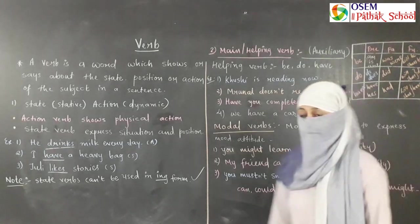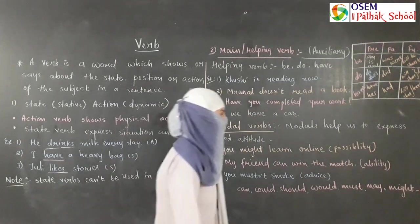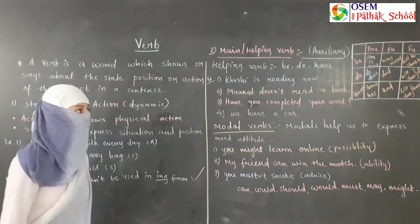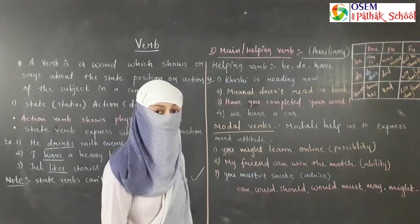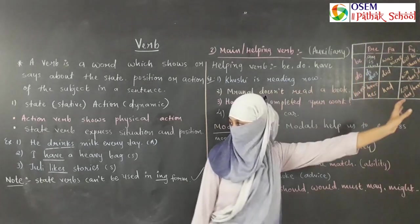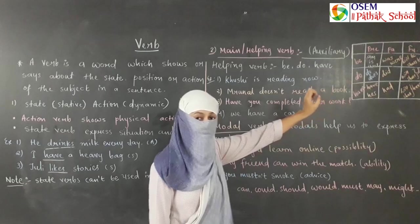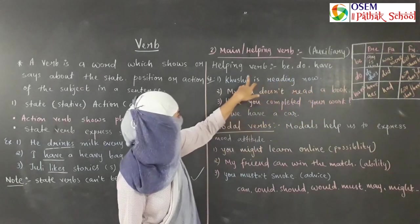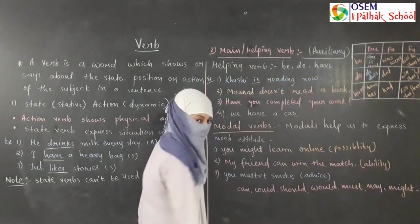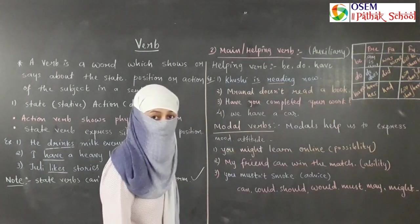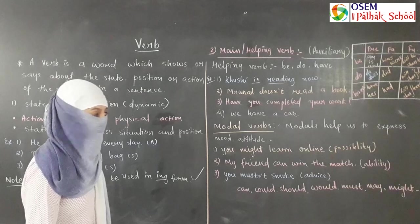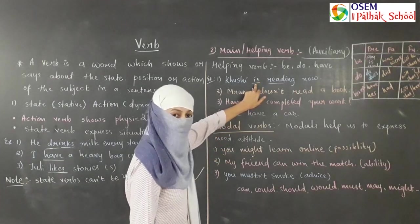Students sometimes make a mistake: for the future tense form of 'be,' you should say 'shall be' and 'will be,' not just 'shall' or 'will.' We use these forms to make negative and question sentences. For example: 'Khusi is reading now' — here 'is' is the helping verb and 'read' is the main verb. 'Is' helps to show the continuous present tense.